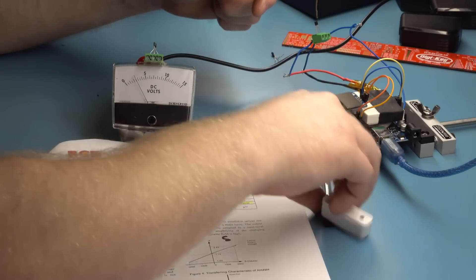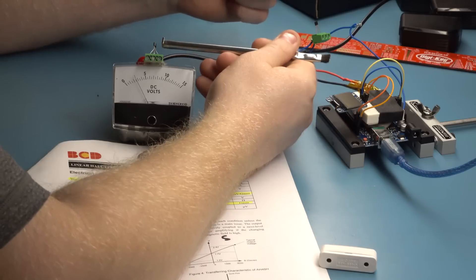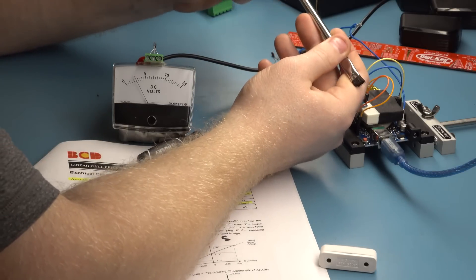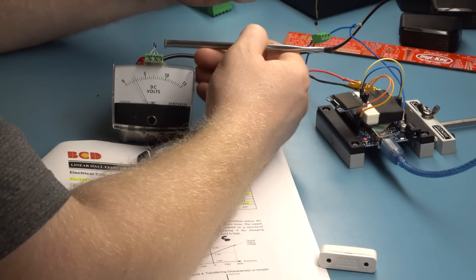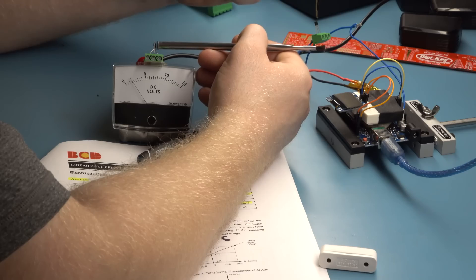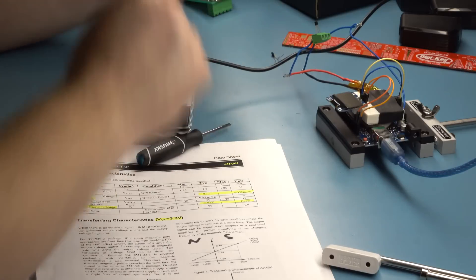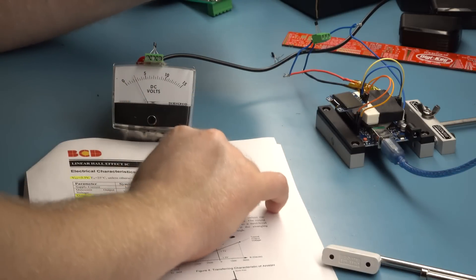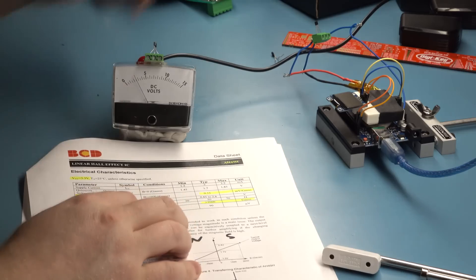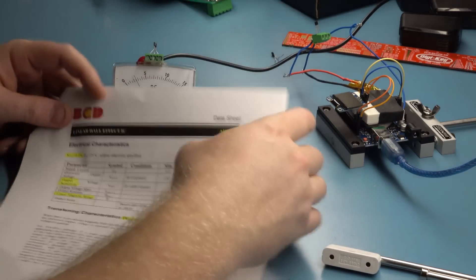So it works the same way. If the magnet is flipped around it will go closer to zero. So we're going to go ahead and use this sensor, this AH49H to make our Gauss meter.